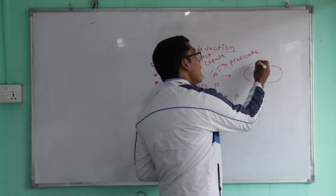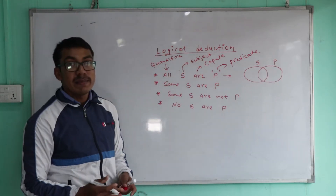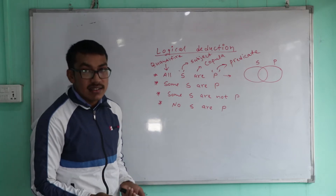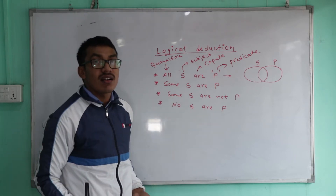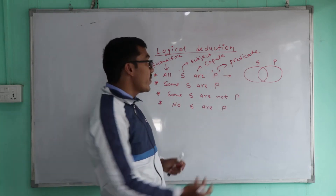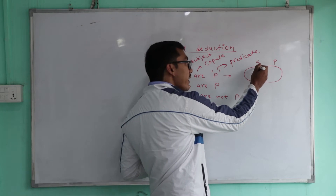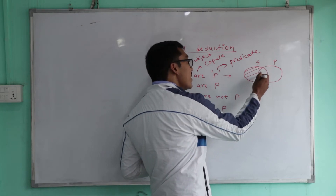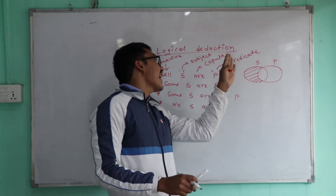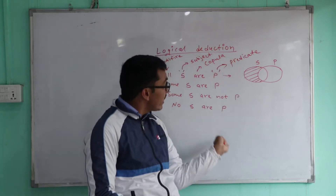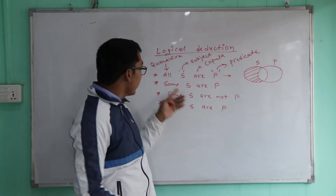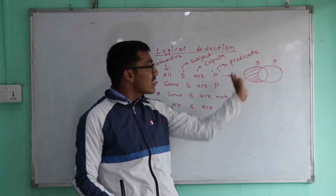So for 'All S are P', this means S is inside P. If you look at All S are P, the circle S is completely within circle P. So all elements in S are also in P.